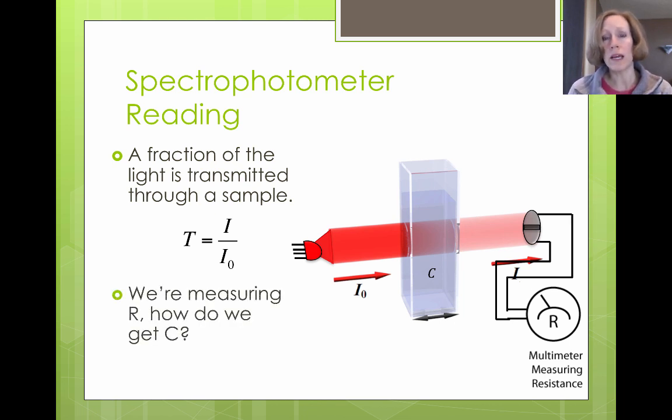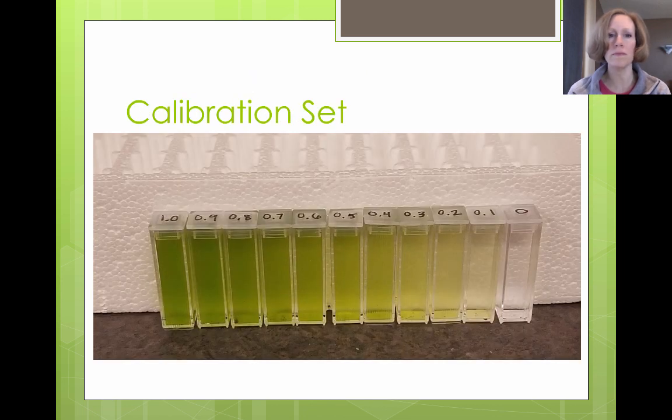So what we're doing here is we're shining light in and we're changing our concentration of our sample, which is what we care about, but we're measuring resistance. So how on earth are we going to get concentration if we're measuring resistance?